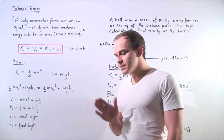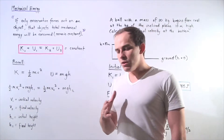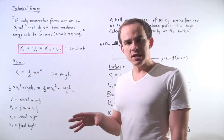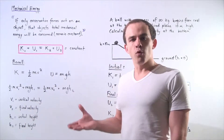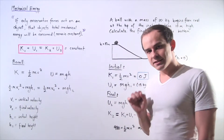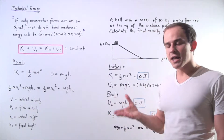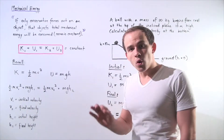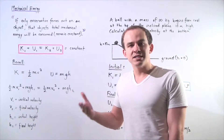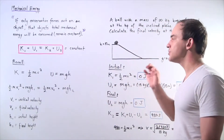Let's suppose that the system we're dealing with is a conservative system. What that basically means is all the forces acting on our object in the system are conservative forces, such as the force of gravity. If only conservative forces are acting on our object in the system, then the total mechanical energy — the sum of the kinetic and potential energy of our system — will be constant; it will be conserved.